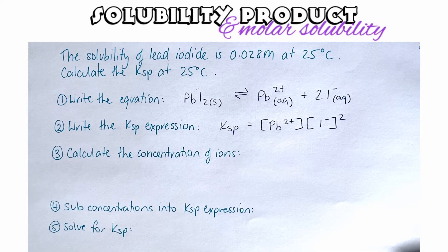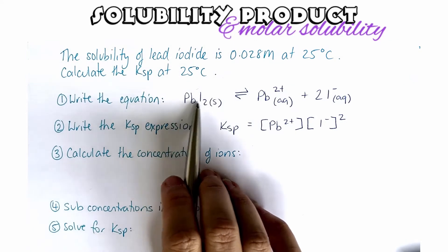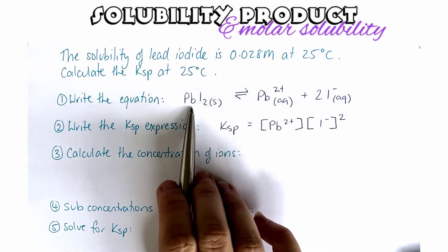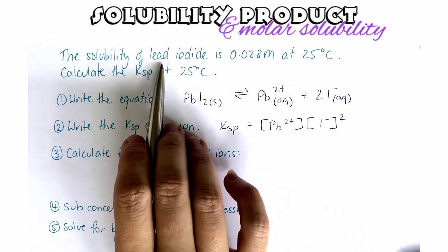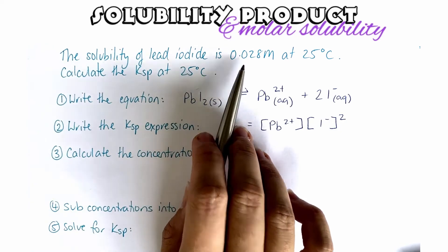Step number three is to calculate the concentration of the ions. Now we get this from the question and from looking at the ratio in our first equation. So we know the solubility of lead iodide is 0.028.